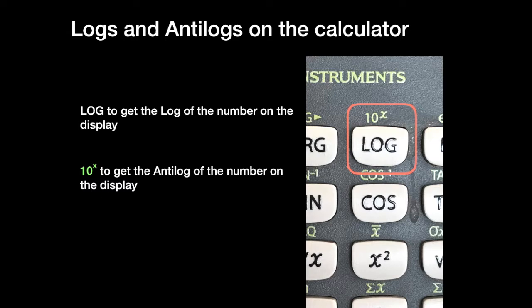Of course, you access the 10 to the X using the second function key. So, to get to the anti-log, you press second function, and then the 10 to the X labeled button. There are two button presses to get the anti-log, and just one to get to the log.